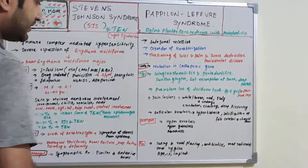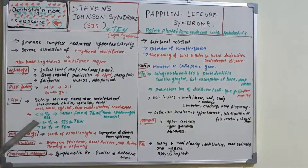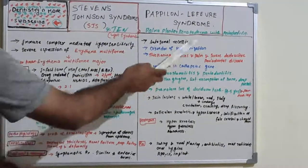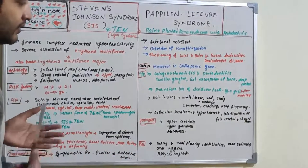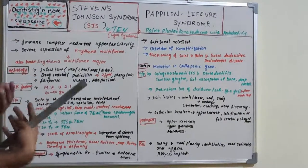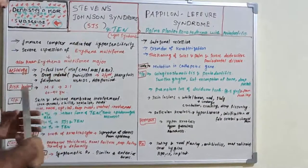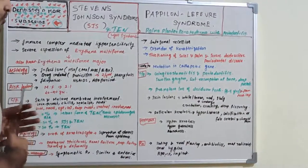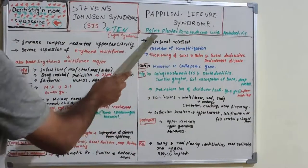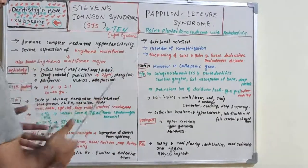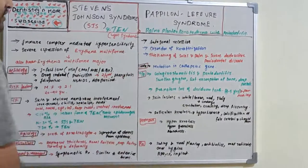Histopathological features include hyperkeratosis, hypergranulosis, and acanthosis. Treatment focuses on managing the periodontitis through scaling and root planing with antibiotics, retinoids, and chlorhexidine mouthwash. Non-saveable teeth are extracted and rehabilitation provided with removable dentures, complete dentures, or implants.